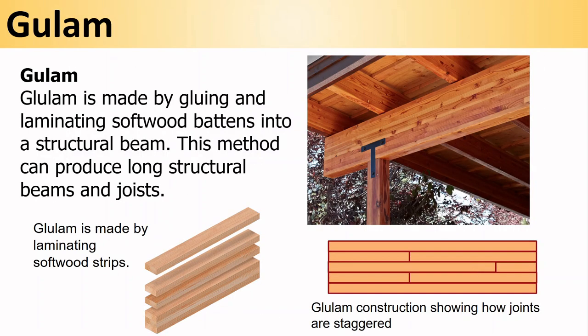Glue lam is made by gluing and laminating softwood battens into a structural beam. This can produce long structural beams and joists of almost unlimited length. The joints are staggered so that no two joints line up in the same place, which makes the glue lam very strong, and you can keep joining on wood to extend the length.